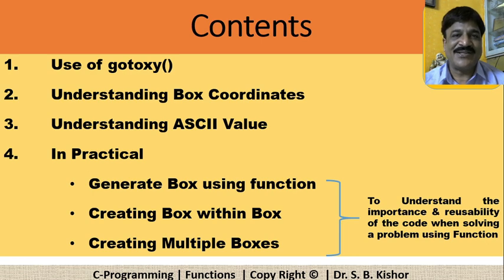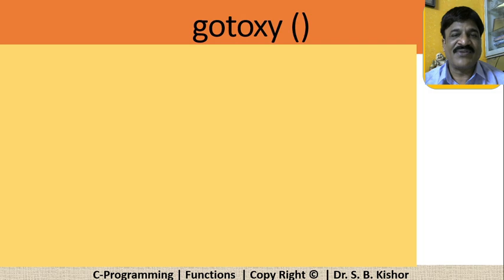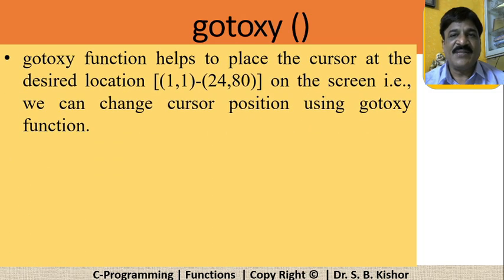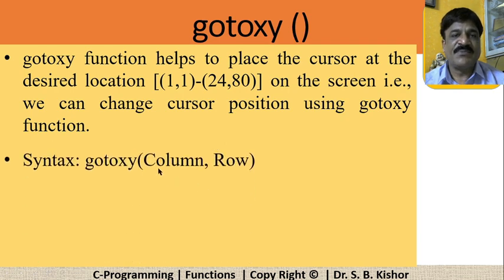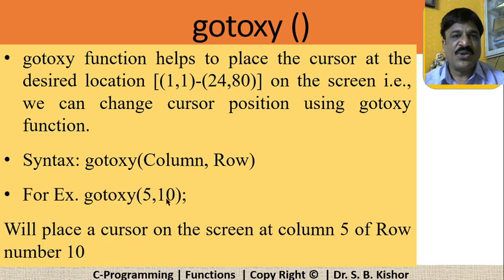Let's start with the gotoxy function. The gotoxy function helps you to place the cursor at a desired location on the screen. The top-left corner is referred to as coordinate (1,1), while the extreme right corner is referred to as (24, 80) — meaning you have 24 rows and 80 columns. The syntax of gotoxy is simple: you specify the column followed by the row. So gotoxy(5, 10) means place the cursor at column 5 of row number 10.